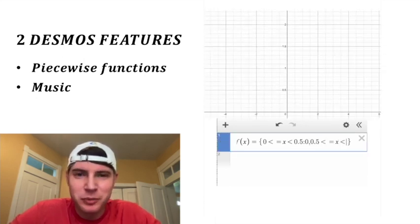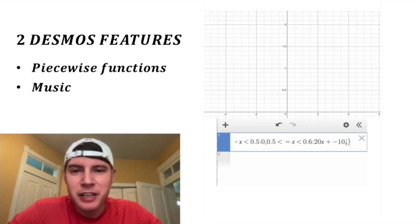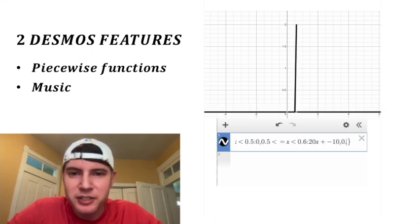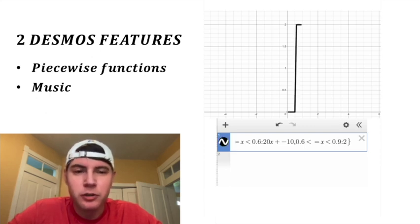Let's go steep on this one. Let's do 20x plus negative 10, and then we put a comma again. And let's do between 0.6 and 0.9, and we'll do the colon, and let's just do two. So now we have another horizontal line.